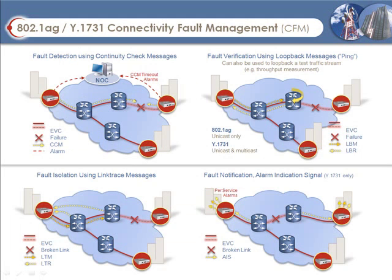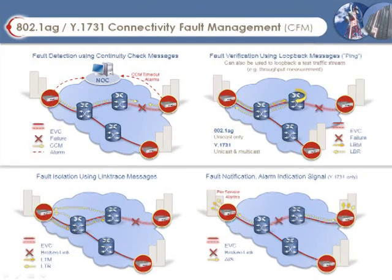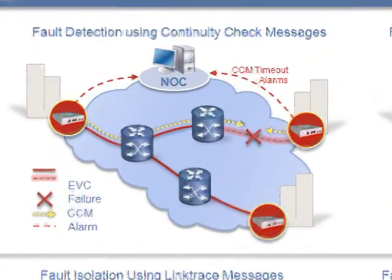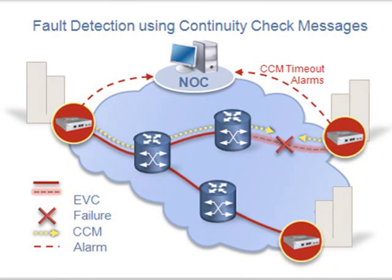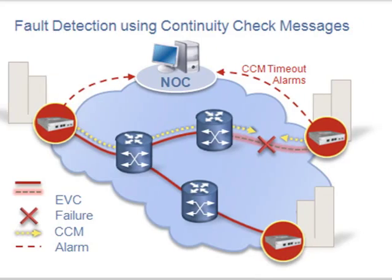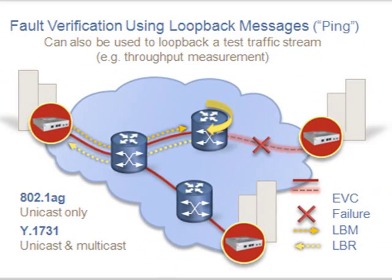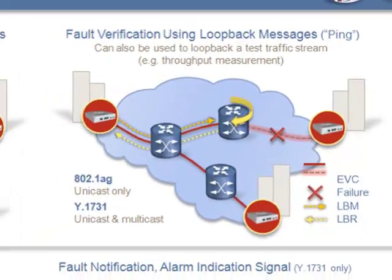The key features of Ethernet OAM CFM are fault detection, verification, isolation, and notification. Service faults are detected by Continuity Check Messages, or CCMs, sent periodically from the service source to the destinations at regular intervals. If service endpoints do not receive the expected CCMs within a specified timeout period, affected endpoints will indicate their loss of continuity with an alarm. Equivalent to the IP ping command, service faults can be verified using a loopback message and their replies. A series of LBMs can be sent to identify the location of a fault by querying maintenance endpoints and intermediate points along the service path.